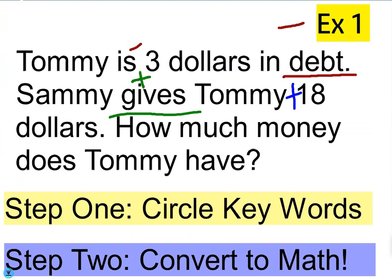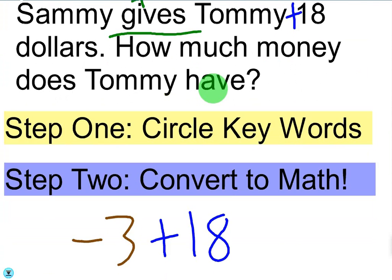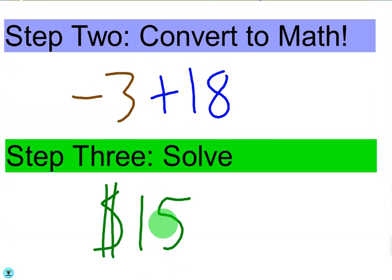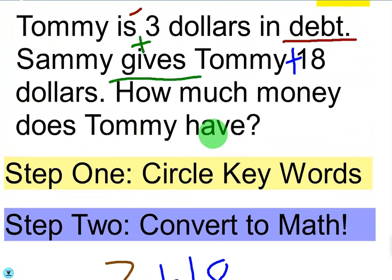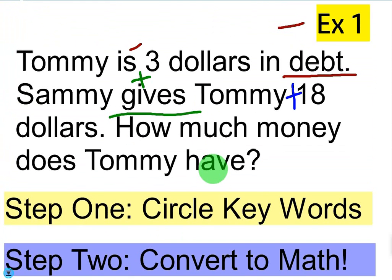We've answered the question — how much money does Tommy have now — and the answer is $15. Just follow these 3 easy steps to get the right answer. Don't try to do it all at once. Break it down. Take your time. That way you don't get overwhelmed and you can be sure you're going to get the right answer every time.